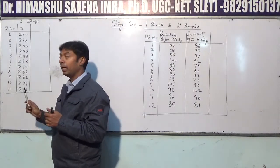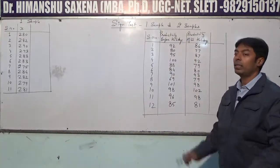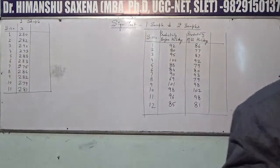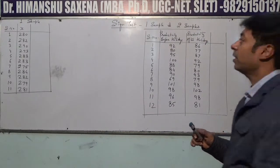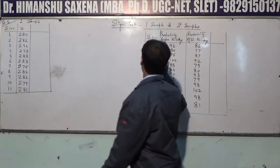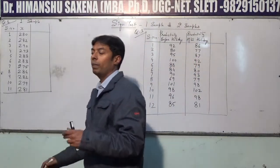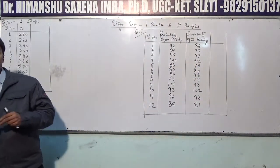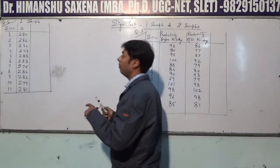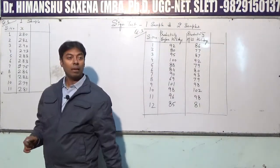Both of these questions will be solved. These are handouts under illustration number one and illustration number three. Question number one and three are both solved. In the first question, there is only one sample, so we apply one sample sign test.